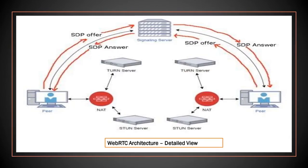This is the pictorial representation of the advanced WebRTC connection. You can see here two peers want to connect to each other using WebRTC. Both peers have a connection to the signaling server before they have a connection to each other. Then the next step is the exchange of the SDP offer and answer through the signaling server. This is represented here with the red line arrows.